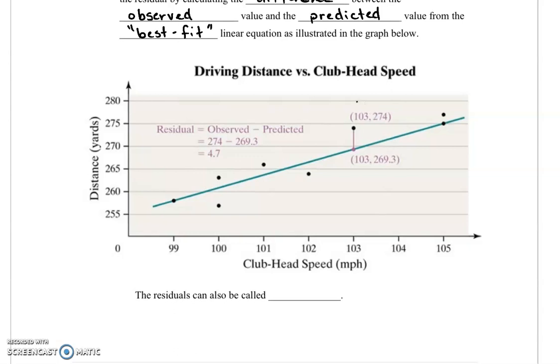This is our observed value right here. In the point 103, 274, the 274 is the observed value. And the line we have here is 103, 269.3.